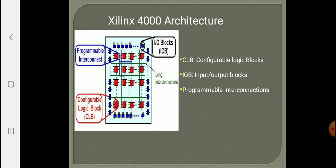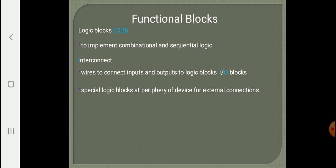We are going to discuss each and everything in detail. A configurable logic block is used to implement combinational or sequential functions, serving as the main core for logic function implementation. It has several logic gates built in to support any kind of logic function supplied by the user. Interconnects can be used to connect CLBs together or to connect a CLB with the I/O block.